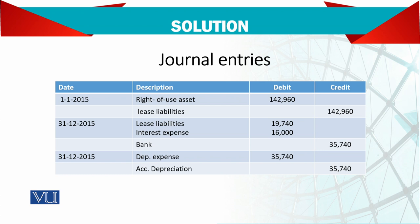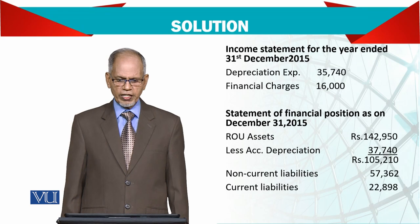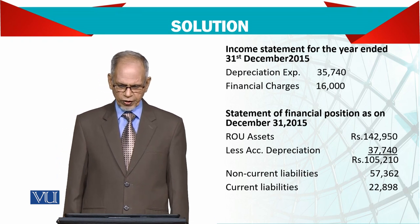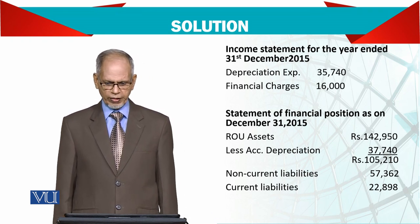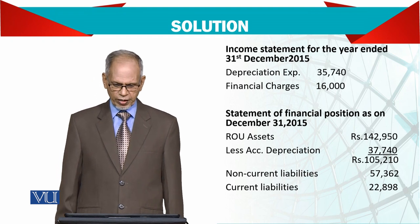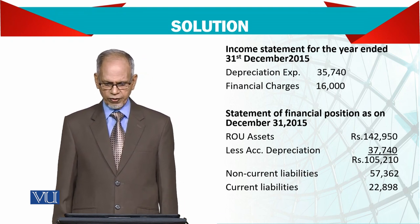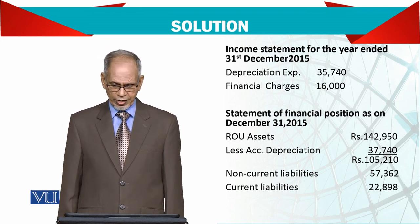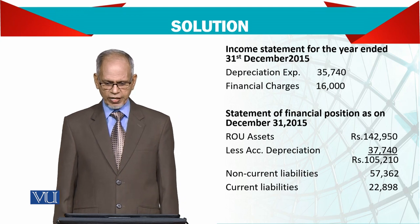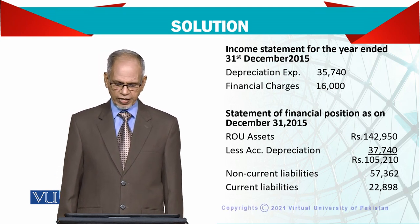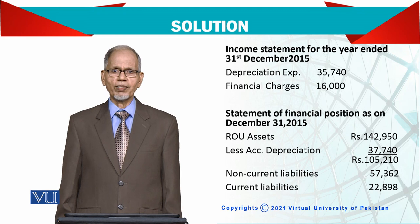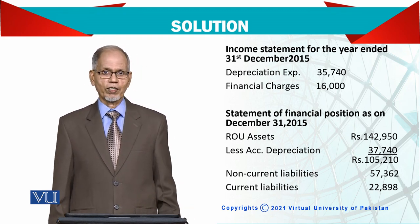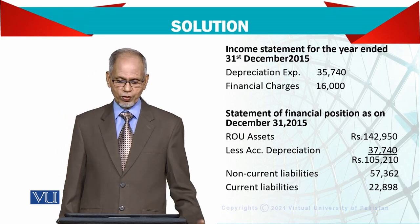On the income statement: depreciation expense and finance charges (interest charges). On the statement of financial position as on December 31, 2015: right-of-use assets 142,950 less accumulated depreciation on the asset side, and on the liability side, non-current liabilities and current liabilities. The current liability represents the total liability to be paid in 2016, since we are reporting as at 2015.